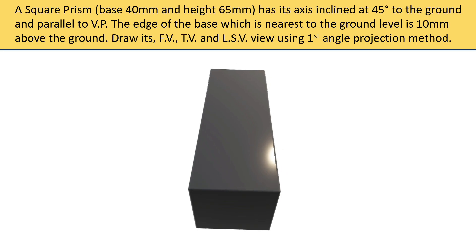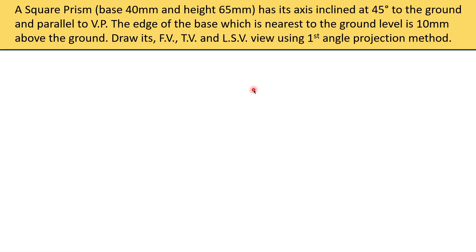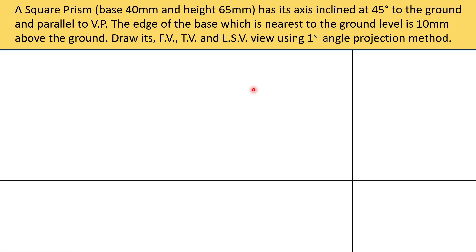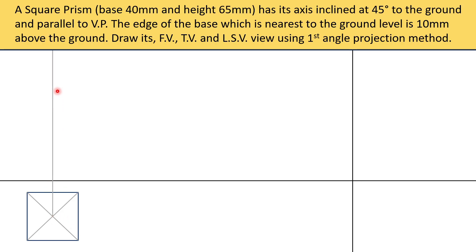Now that we have visualized the question, let's start drawing the diagram. First we need to draw the planes and then we need to draw a square as the top view. The square will be 40 mm by 40 mm. Next we have to draw the diagonals so that we get the center point. The center point will be the axis. We will extend the axis and draw a line perpendicular to it, and draw a few more lines from the base so that we have enough guiding lines to draw the actual side view.